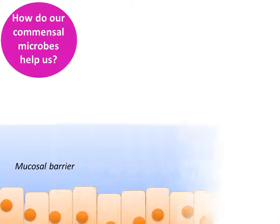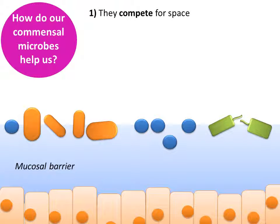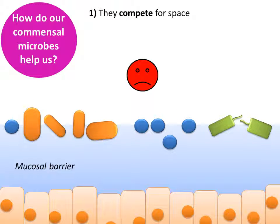Commensals are generally considered to be a good thing. Some people consider them actually part of the innate immune system and they help in a number of ways. Let's start by drawing a picture — we've got our epithelial cells at the bottom, then our mucus barrier on top, and we're going to colonise it with a range of different cells. The first thing is that they simply compete for space with pathogens. When pathogens arrive through contaminated water or food, they find it very difficult to find space to grow because these commensals are already present.